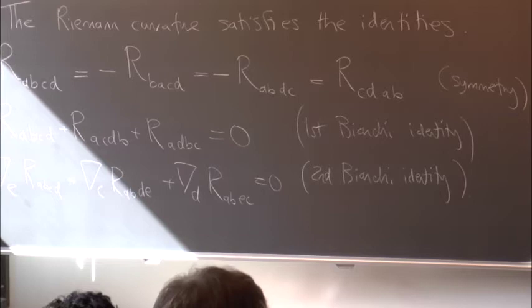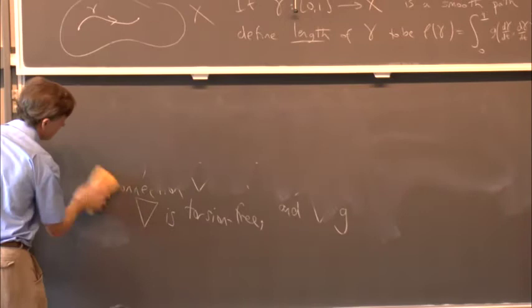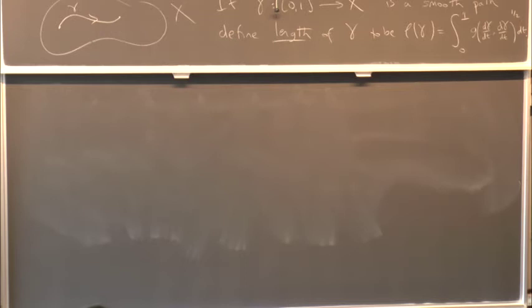These identities are all going to be rather important later, particularly when we get to Berger's theorem. It turns out there are very deep connections between the holonomy group of a Riemannian metric and its curvature — the Lie algebra of the holonomy group lives in the first two indices of the curvature tensor.